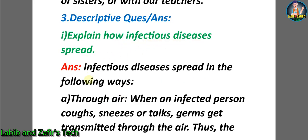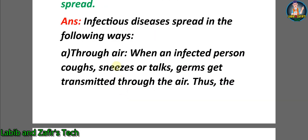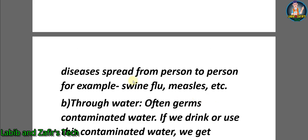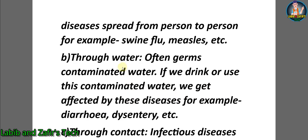Now let's go through some descriptive question answers. Question one: explain how infectious diseases spread. Answer: infectious diseases spread in the following ways. A) Through air — when an infected person coughs, sneezes, or talks, germs get transmitted through the air; diseases spread from person to person, for example swine flu, measles, etc. B) Through water — germs contaminate water; if we drink or use this contaminated water we get affected, for example diarrhea, dysentery, etc.